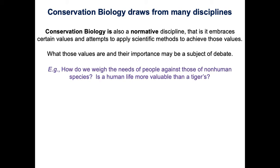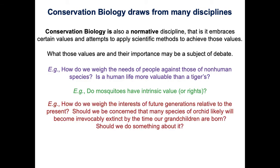Some of these ethical questions include: How do we weigh the needs of people against those of non-human species? What is the value of a human life relative to a species of wildlife, like a tiger? Do mosquitoes have intrinsic value or rights? How do we weigh the interests of future generations relative to the present? We all need resources now, but people will need resources in the future — so how do we make decisions based on both? Should we be concerned about species that might go extinct in the near future, and should we do something about it? These are really social, moral, and ethical questions that society needs to answer.